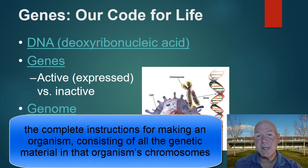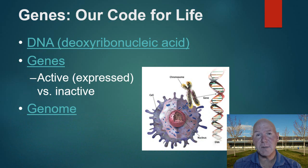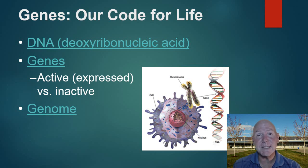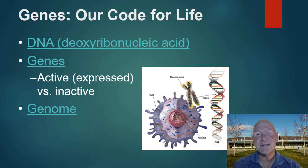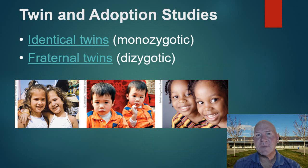A genome is all of the genes available to us. The Human Genome Project, completed in 2003, identified all the genes belonging to the human species. Now we're studying how they combine and how we can use that knowledge to advance human health. Your genotype is the genes you contain, while your phenotype is how those genes are actually expressed — how they make you look or be a certain way.